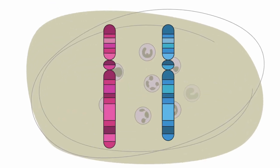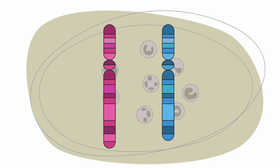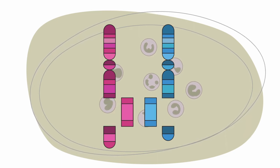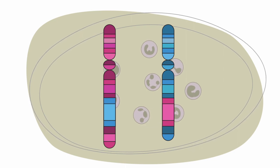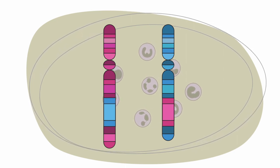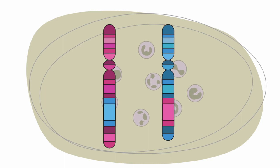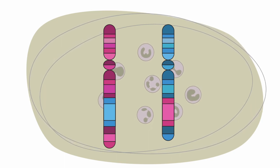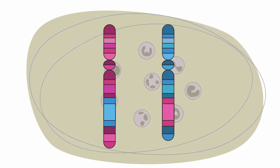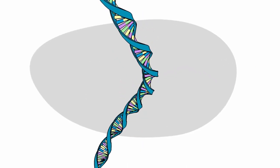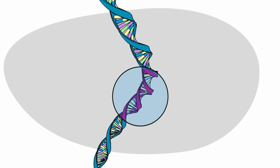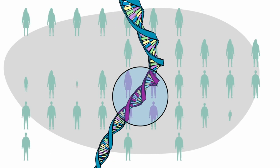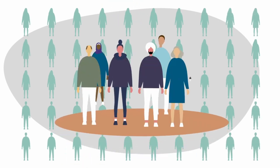In acute promyelocytic leukemia or APL, genetic damage causes parts of chromosomes 15 and 17 to switch places with each other. This exchange of parts of chromosomes is called translocation. The changed chromosome 15 contains a new gene called PML-RARA, which is found in almost all people with APL.